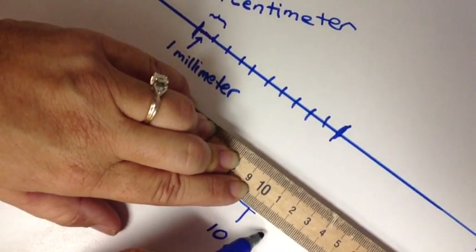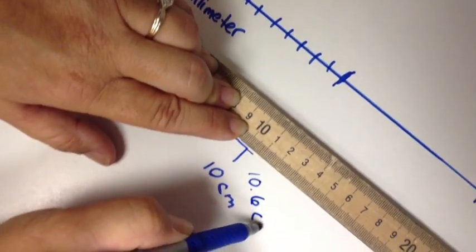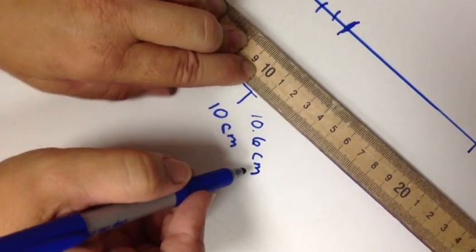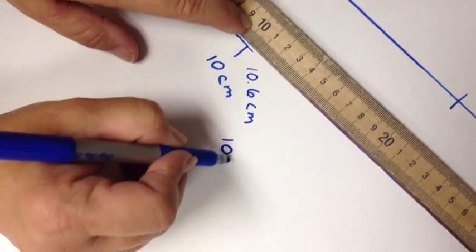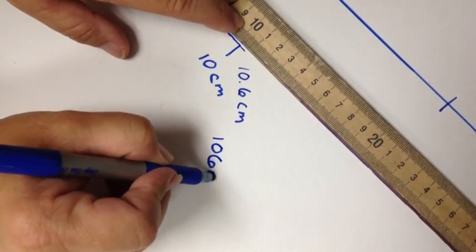Then that would be written as 10.6 centimeters, which is equal to 106 millimeters.